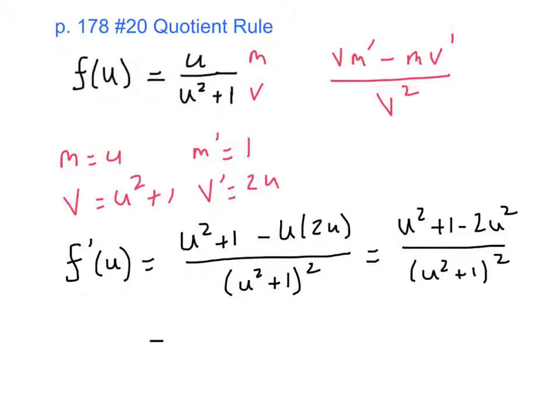And finally, doing a little combining like terms in the numerator, I get 1 minus u squared over u squared plus 1 squared. And that is going to be our derivative.